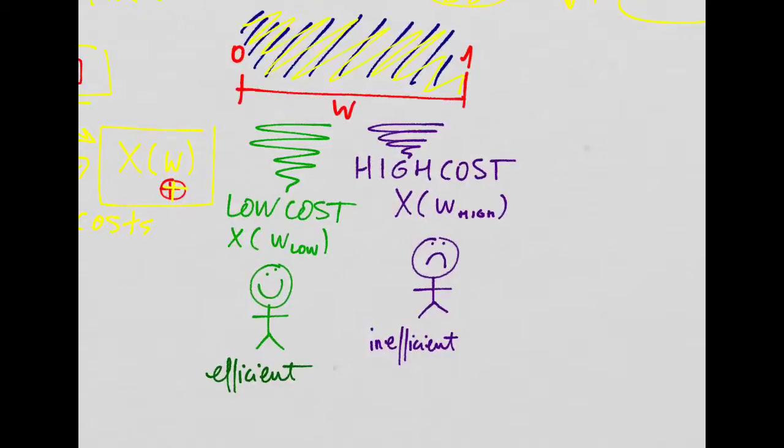That means that if you plot the distribution of entrepreneurs out there by type, you're going to see that the people with low W are going to be the low-cost entrepreneurs. They're going to be very efficient. And then there's going to be the type of entrepreneurs that have high W, the high-cost entrepreneurs, because they're very inefficient.